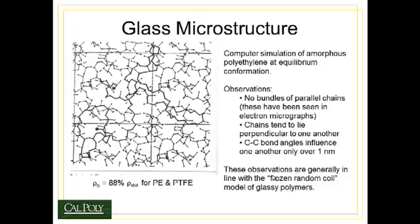The picture on the left shows a computer simulation of what a polyethylene structure would look like in the glassy solid state. Some things you can observe are that there are no polymer bundles of chains that are parallel to each other. All the polymer chains seem to cross one another at 90 degree angles. The carbon-carbon bond angles only seem to influence one another over a distance of about one nanometer, so there's a high degree of contortion and twisting and kinking of the polymer chain. These observations are generally in line with what we call the frozen random coil model of glassy polymers. We imagine the polymer to be a random coil or contorted bowl of spaghetti that's simply frozen in space to form the glassy microstructure.